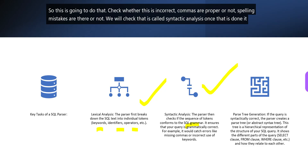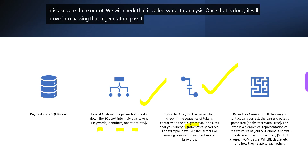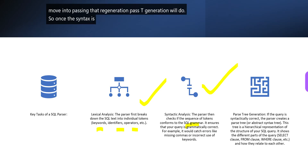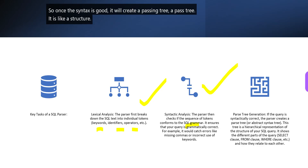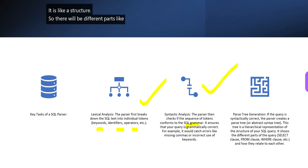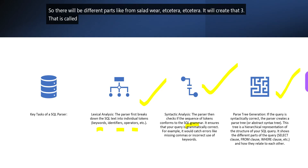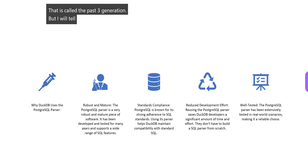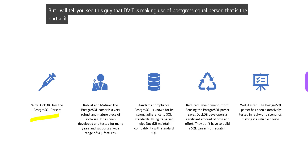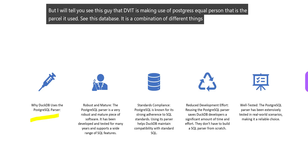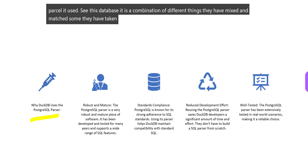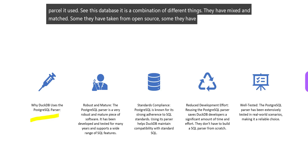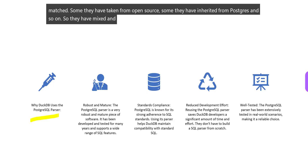Once syntactic analysis is done, it moves into parse tree generation. Once the syntax is good, it creates a parsing tree — a structure with different parts like FROM, SELECT, WHERE, etc. That is the parsed tree generation. DuckDB makes use of the PostgreSQL SQL parser — this database is a combination of different things; they have mixed and matched, some taken from open source, some inherited from PostgreSQL.